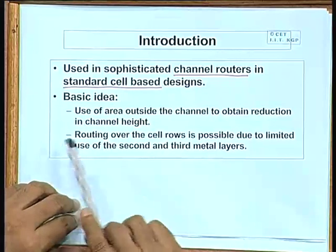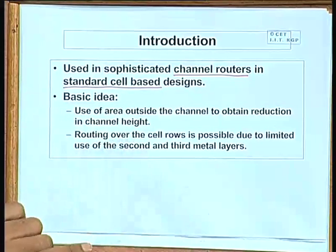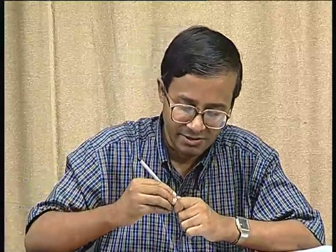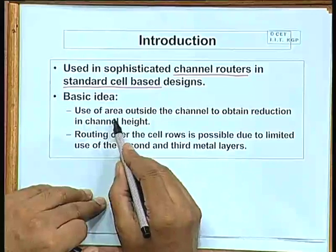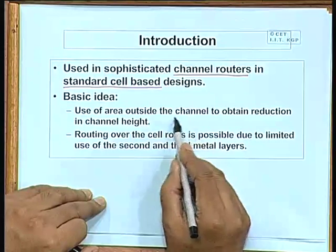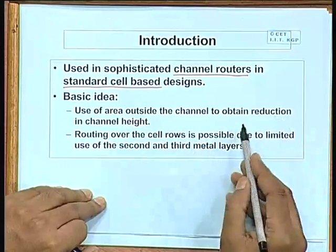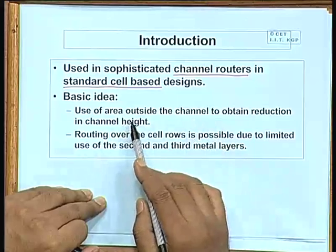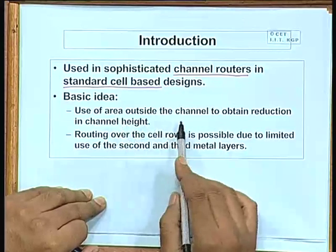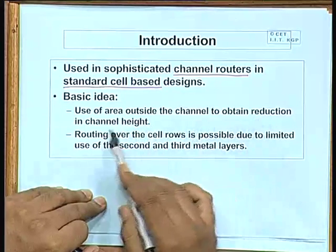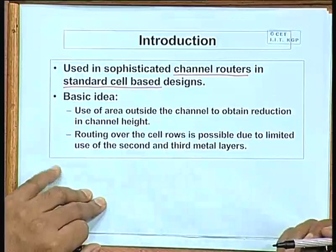In a standard cell based design, we typically use the area between the cells to complete the interconnection. But in over-the-cell routing, we use some of the space which is above the cell area — that is, some area outside the channel, meaning over the cell rows. We use this for routing in order to reduce the total height of the channel in terms of the number of tracks needed.